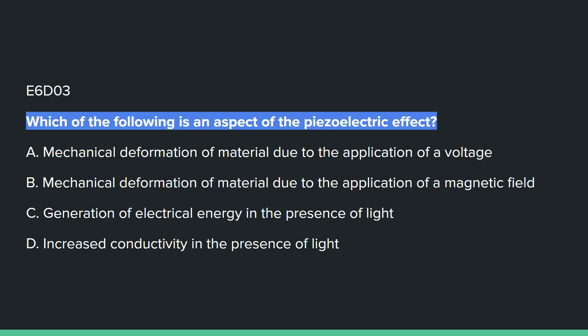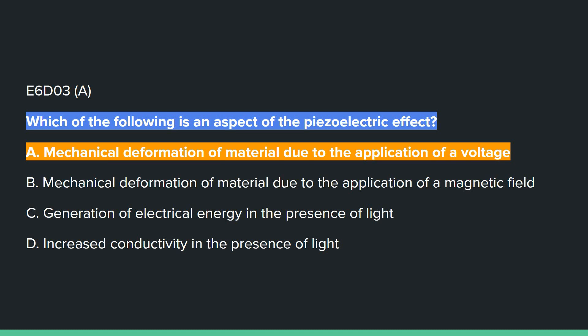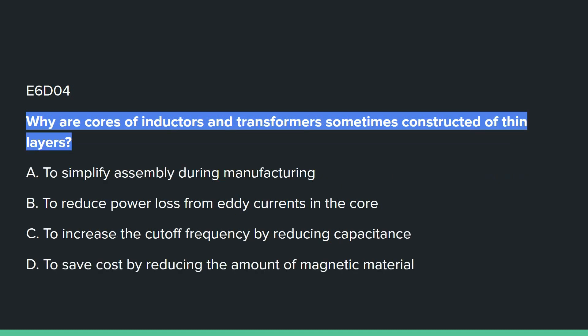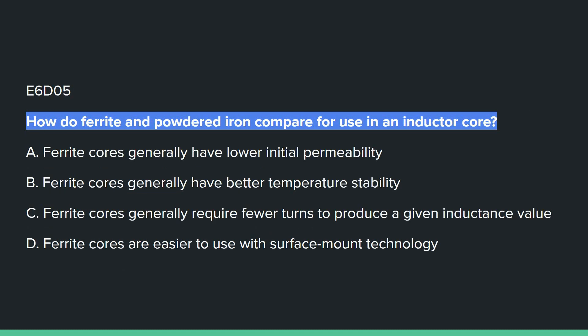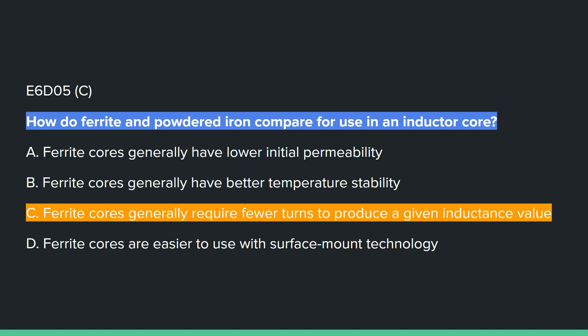E6D03: Which of the following is an aspect of a piezoelectric effect? A, mechanical deformation of materials due to the application of a voltage. E6D04: Why are cores of inductors and transformers sometimes constructed of thin layers? B, to reduce power loss from eddy currents in the core. E6D05: How do ferrite and powdered iron compare for use in an inductor core? C, ferrite cores generally require fewer turns to produce a given inductance value.